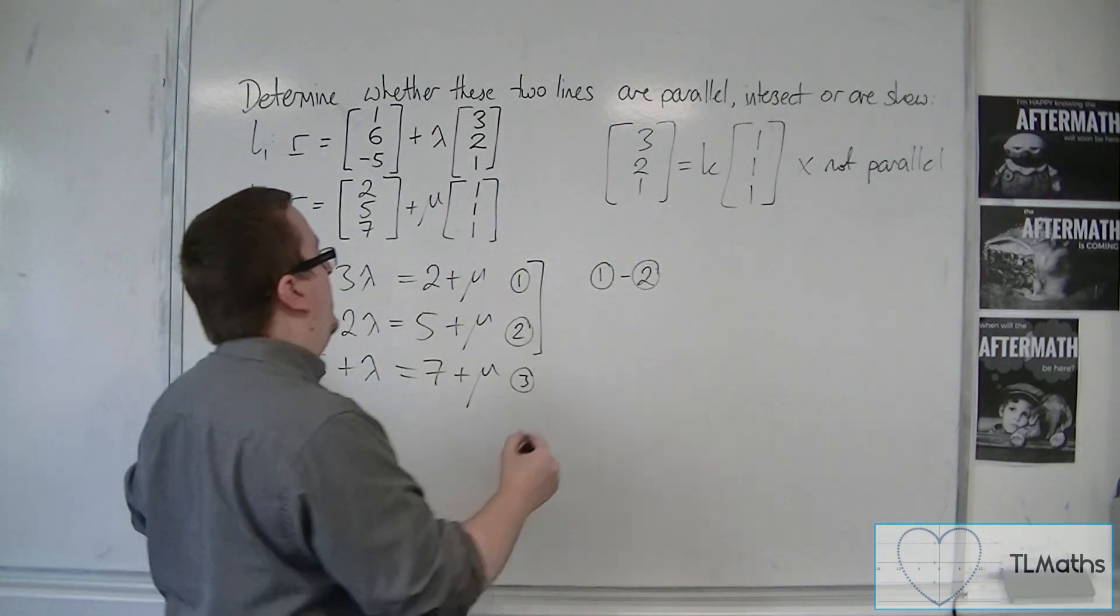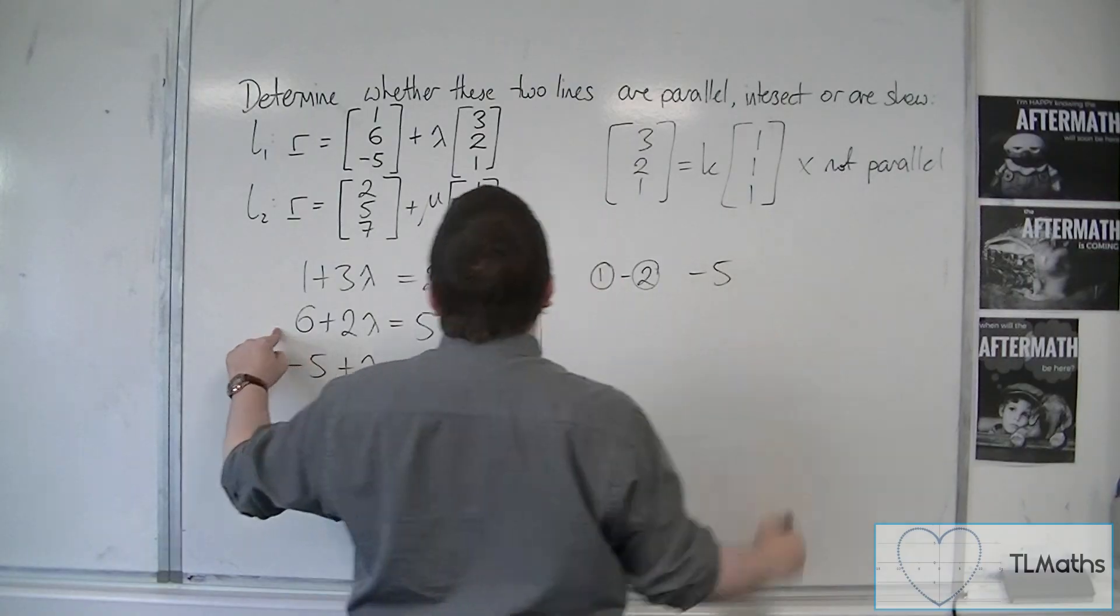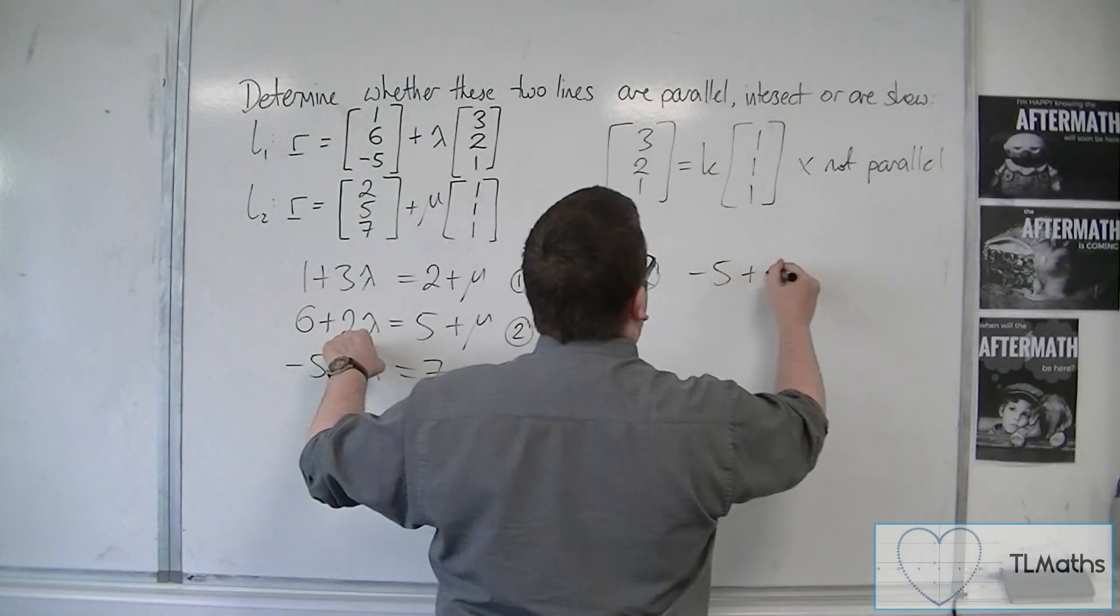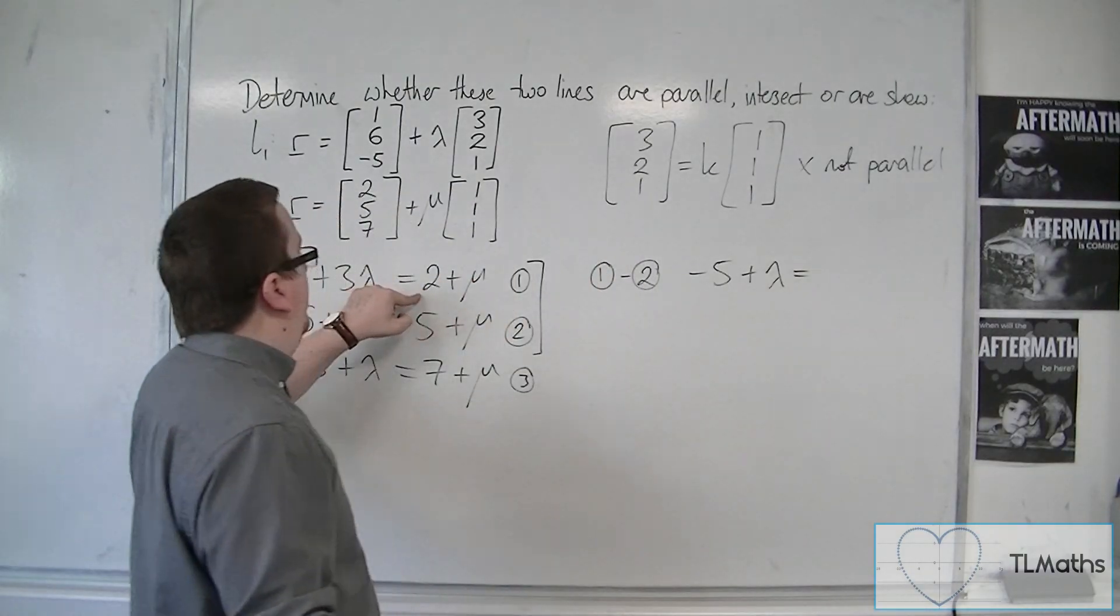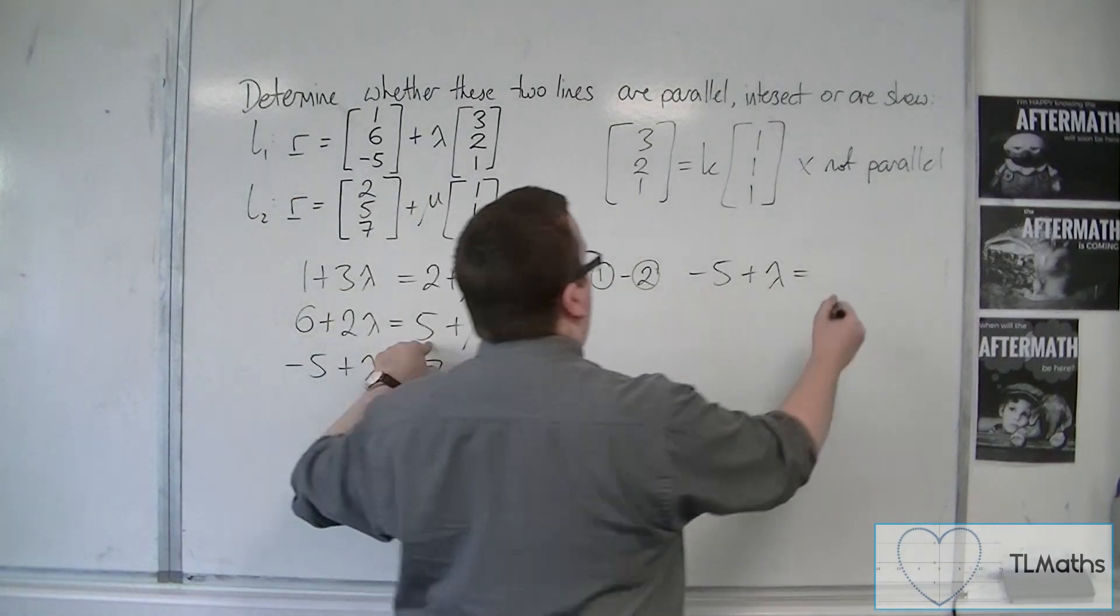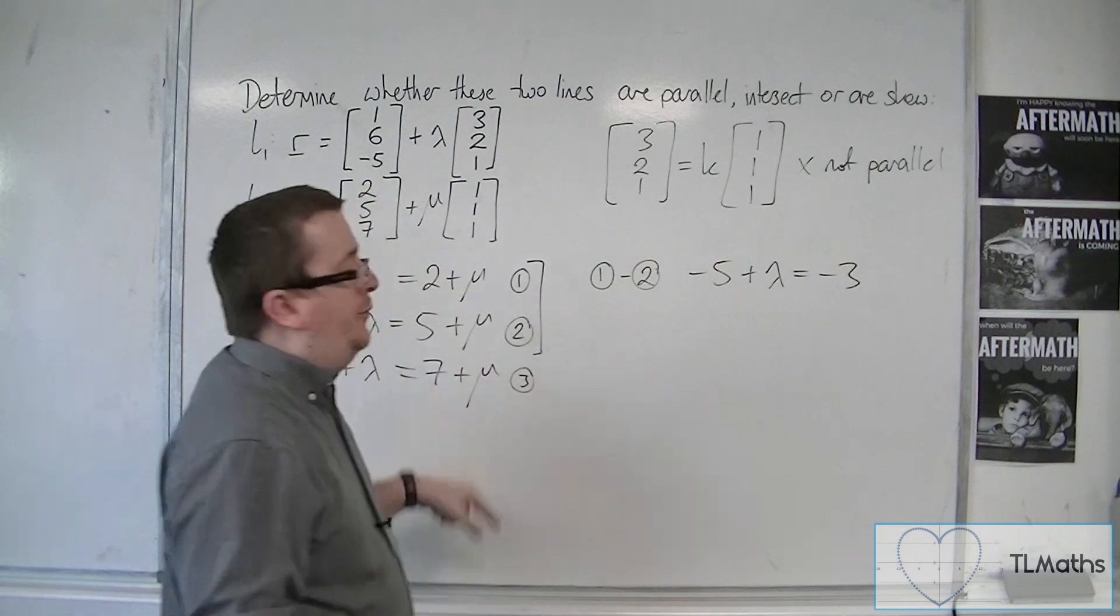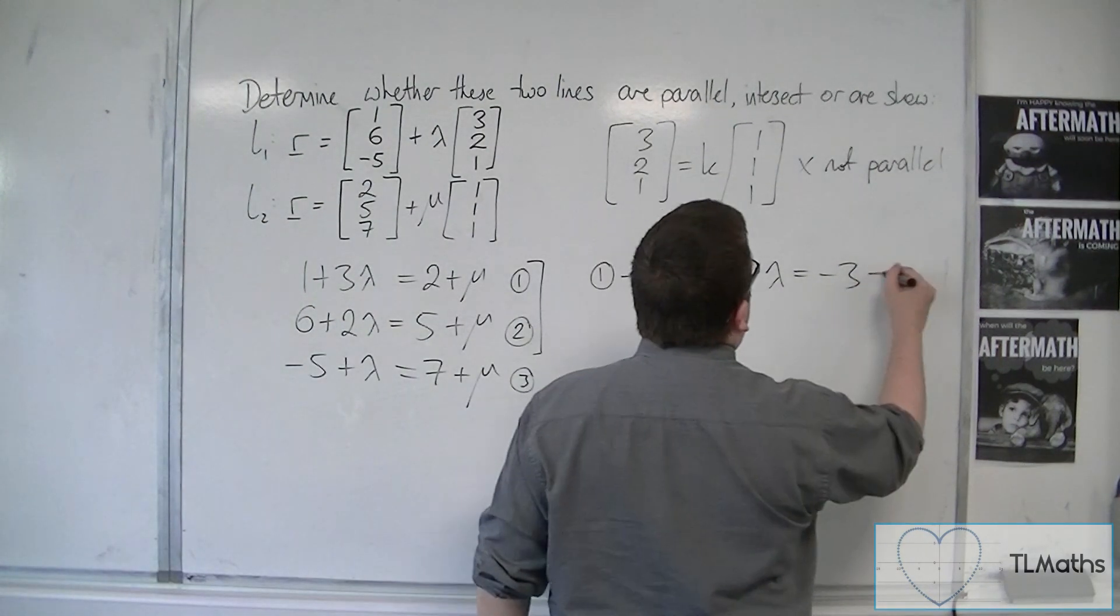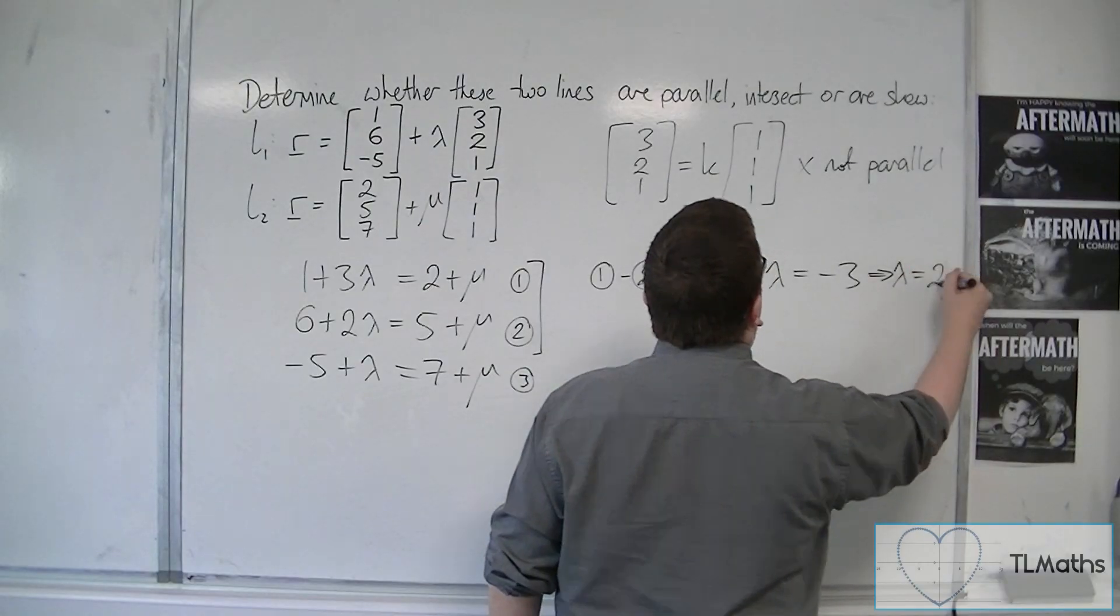We get 1, take away 6, is minus 5. We've got 3 lambda, take away 2 lambda, is just lambda. And we've got 2, take away 5, is minus 3. And the mu's cancel, as was desired. So then you can add 5 to both sides, and so lambda is 2.